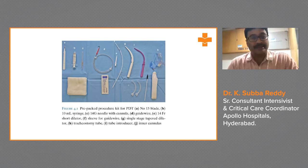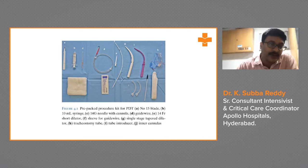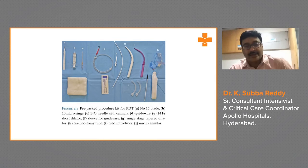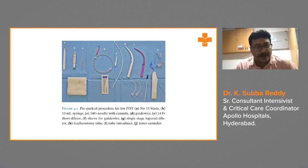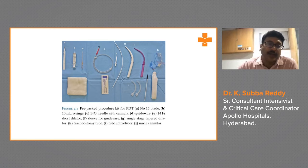The pre-packed procedure kit contains: a size-15 blade to make a nick, a 10 ml syringe to aspirate and locate the trachea, a 14-gauge needle with cannula, a guide wire, a 14-French short dilator sleeve for the guide wire, a single-stage tapered dilator, a tracheostomy tube, a tube introducer, and inner cannulas for maintaining patency of the tracheostomy tube.